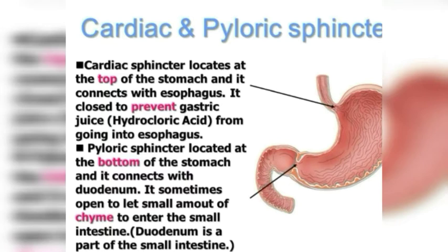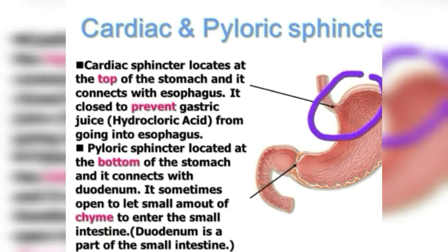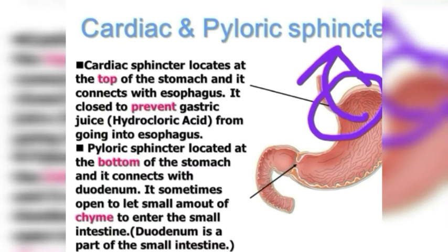Before the food gets digested in the stomach, let me tell you about the cardiac and pyloric sphincters. The cardiac sphincter is located at the top part of the stomach and connects the esophagus to the stomach. Its main function is to prevent the backflow of hydrochloric acid into the esophagus during digestion.